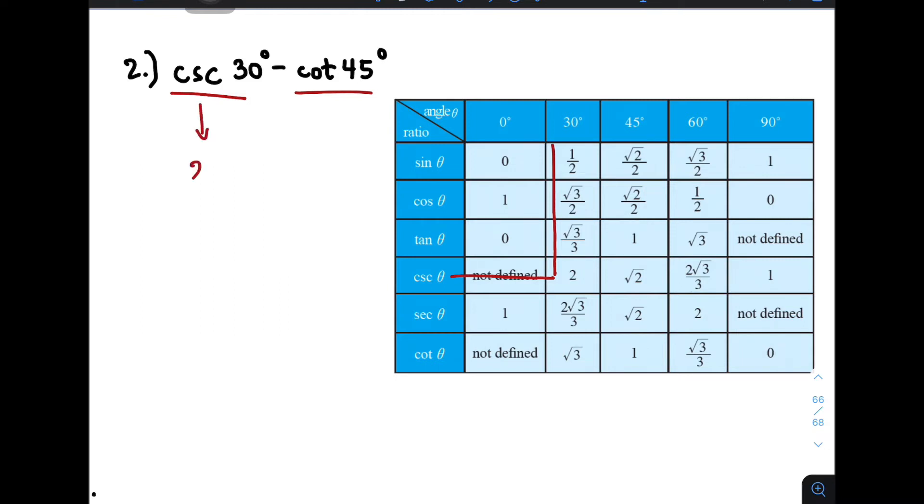We will replace this by 2 minus cotangent 45 degrees. This is your cotangent 45 degrees. And as you can see, the value of it is simply 1. And 2 minus 1, that would give you the answer of 1. And this is the value for item number 2.